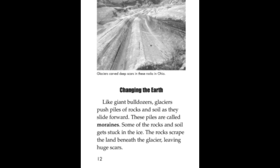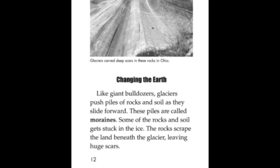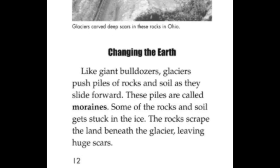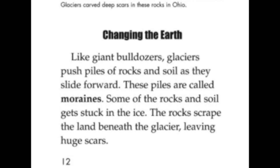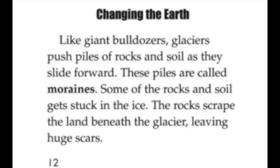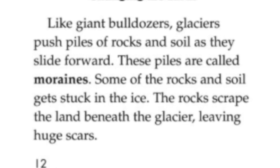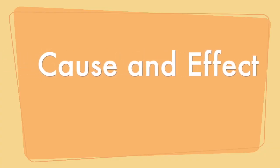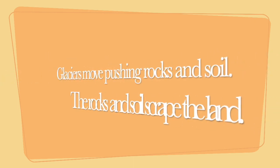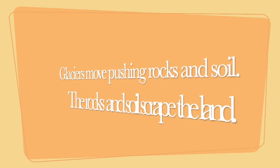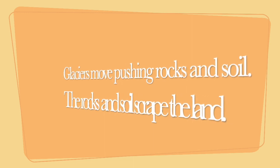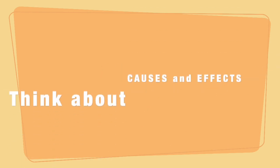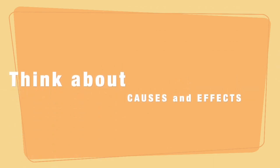I read that as the glaciers push piles of rocks and the soil and move forward, that's the cause. The effect is that the rocks and the soil get stuck in the ice and scrape the land. So I can see a connection here, a cause and effect connection. Glaciers move, pushing rocks and soil. That's my cause. And then what happens? The rocks and the soil scrape the land. That's one connection. Think of some other causes and effects.